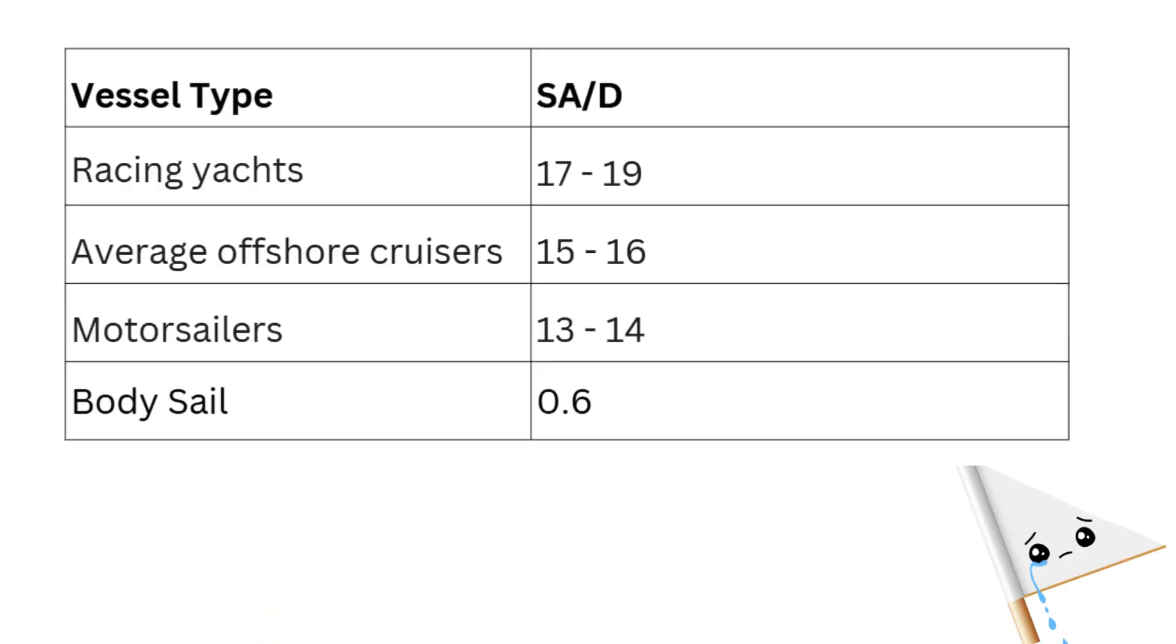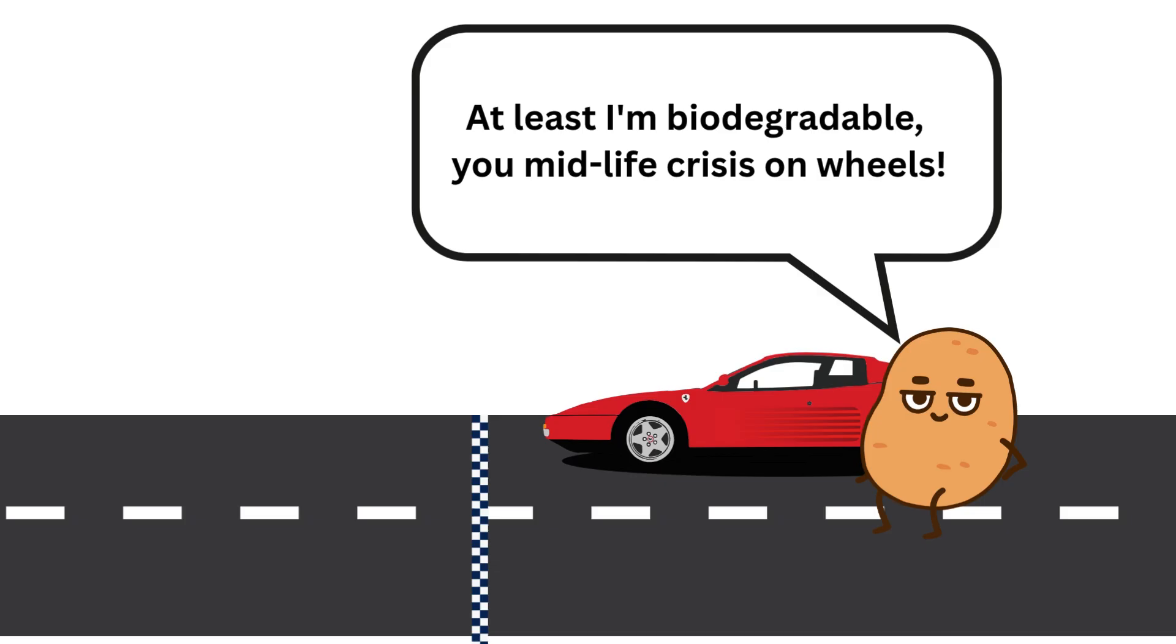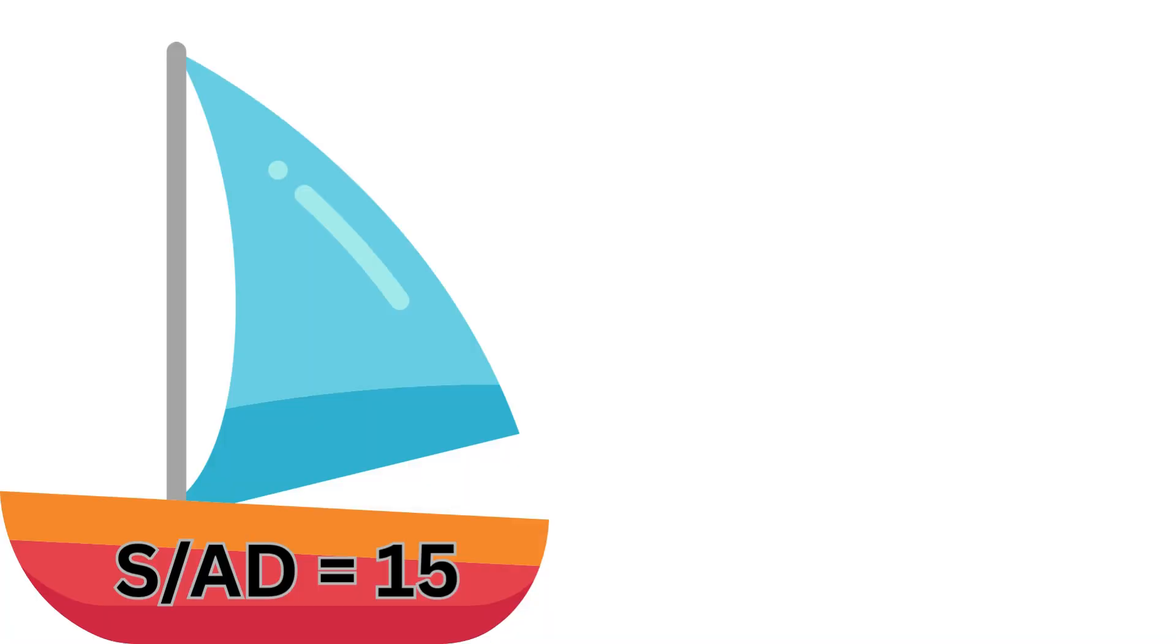Now for context, here's the SAD ratio of various vessels. Shocking right? So it's a bit like comparing a Ferrari to a potato. A normal sailboat with a SAD ratio of 0.6 would look something like this.